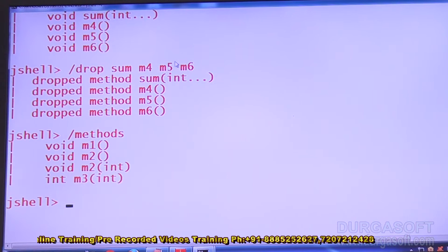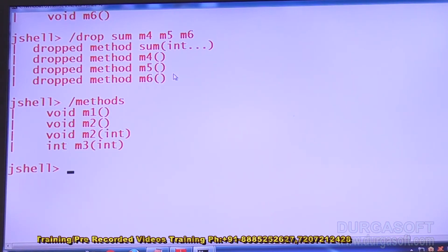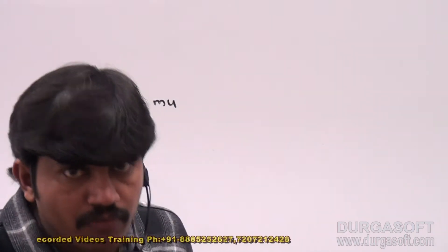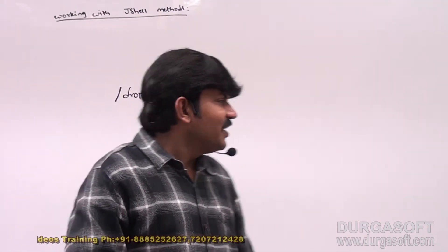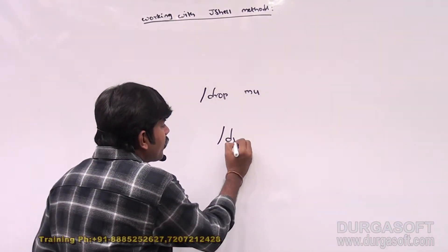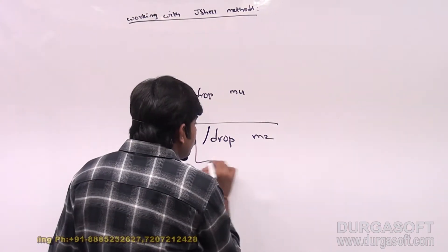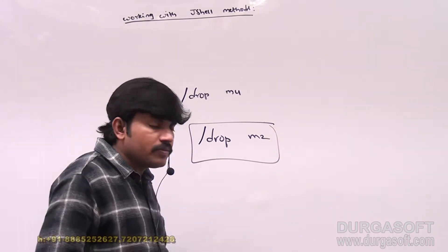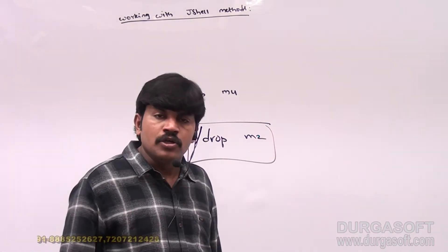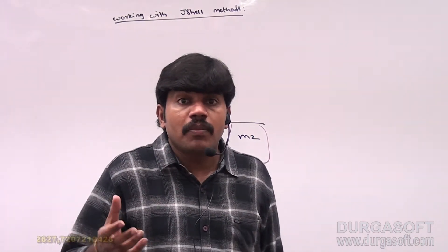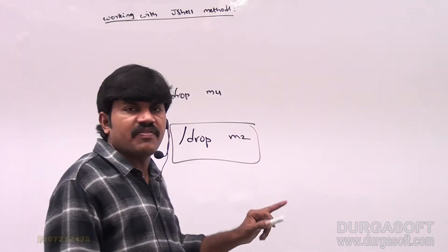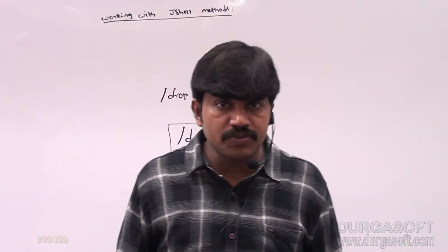Let me cross check — how many methods are there now? Only m1, m2, m2 of int, and m3 — four methods are available. Now you should be aware of how to drop a method. But there is one small twist. Suppose I use drop m2 — with the m2 name there are two methods. Which method will be deleted or dropped if multiple methods share the same name?